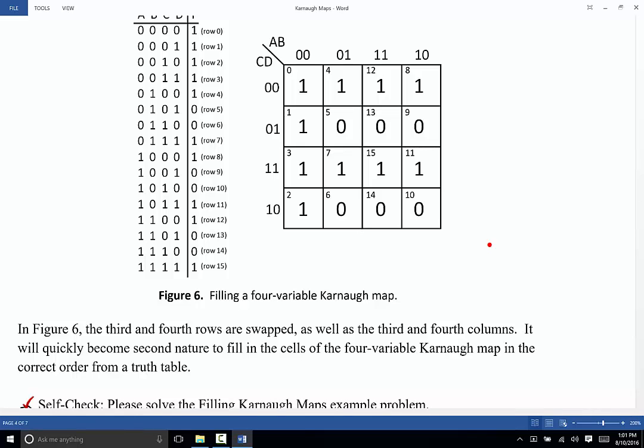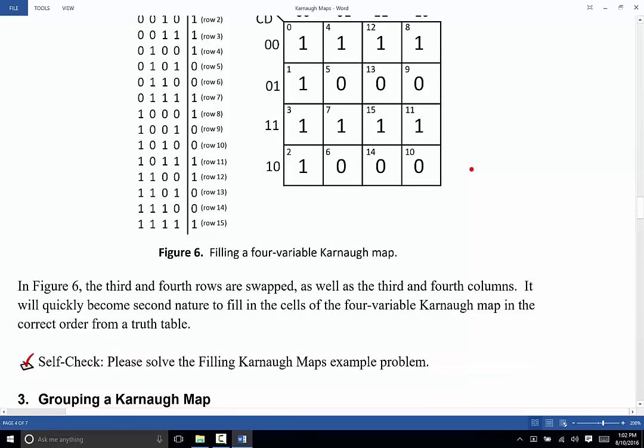And I think adding those cell numbers in the top left corner of each cell, I think that makes a big difference. I think it helps to remind you that you need to swap the third and fourth column and the third and fourth row. So you now have enough information to solve the first example problem for today, the filling Karnaugh Maps example problem. Before you tackle that one, you might go back up to the previous figure.